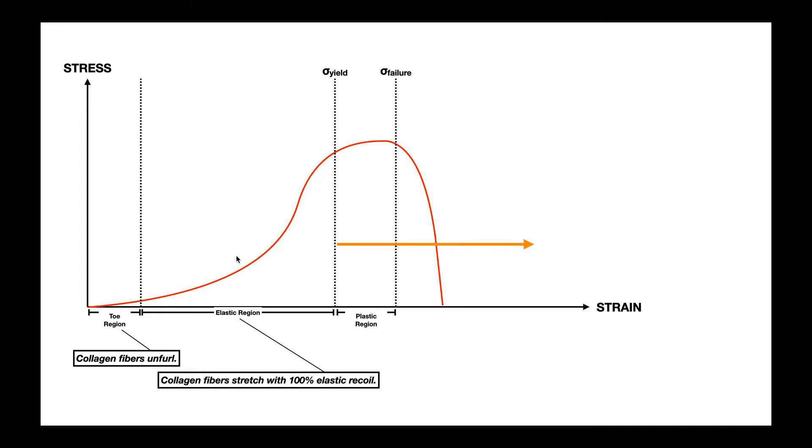Notice while we're in the elastic region here, we can increase the strain on those collagen fibers, but at some point they start feeling a lot of stress. And at a certain point called the yield point, this is the limit of elasticity. So in other words, if we go beyond this yield point, those collagen fibers are not going to return to their exact resting length once we release the tension.